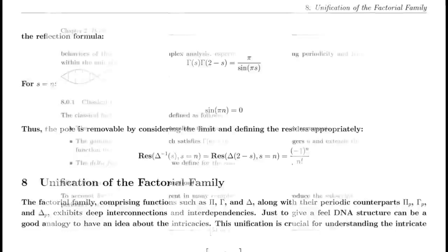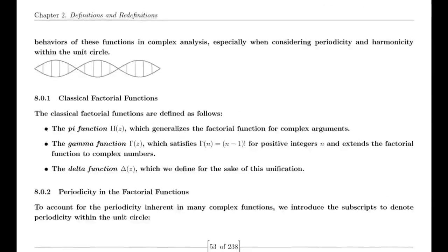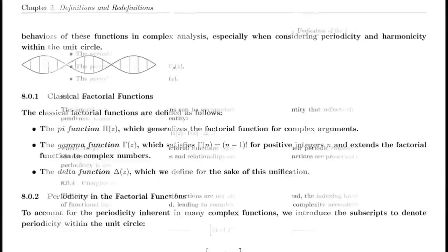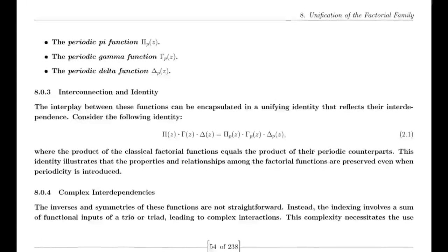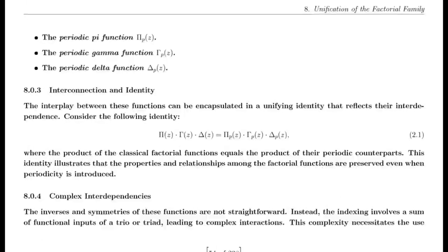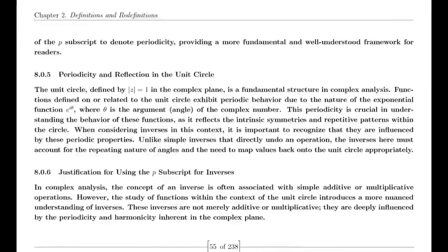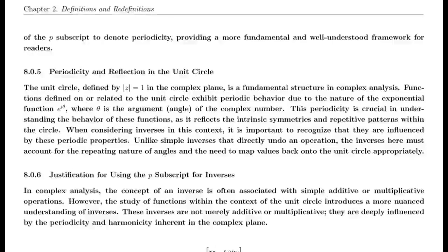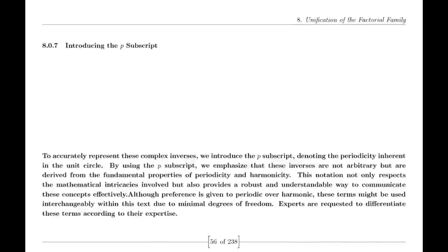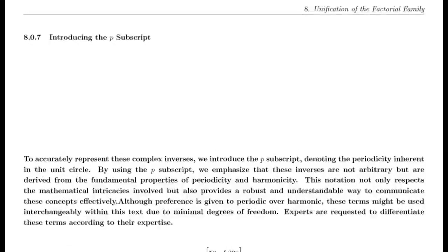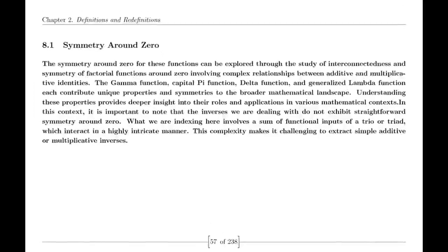Suraj proposed that these relationships demonstrated a deeper symmetry within mathematical structures — an elegant dance of numbers that transcended traditional boundaries. For instance, he argued that the equation 1 − (1/2)×2 = 0 within the framework of the dual unit circle illustrated a profound interconnectedness. Similarly, he presented 1 − (1/2)×e^(ln 2) = 0 in the dual unit sphere, suggesting that these relationships revealed hidden truths about mathematical dualities. However, as Suraj shared these concepts, he faced significant criticism. Many mathematicians pointed out that while his insights were intriguing, they lacked a formal foundation within established mathematical frameworks. Critics argued that the notion of duality, as he described it, was not rigorously defined in current mathematical literature.